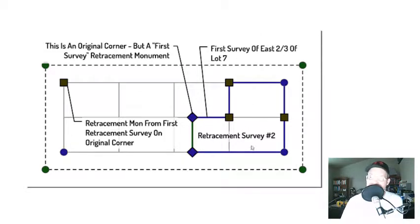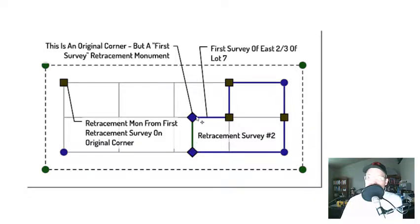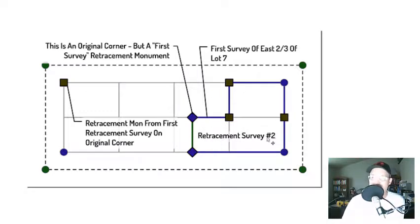This survey is the second retracement survey in this block, but it's what Brown's calls the 'first survey' of the east two-thirds of the lot. It's not an original survey because it didn't create that two-thirds chunk — it's just retracing what was in the deed. If this had been a parcel map, these monuments would be original controlling monuments per the parcel map, but we're just retracing a deed — that's what Mr. Brown calls a first survey. What he says in chapter two is these monuments get treated with a little more deference than a regular retracement monument because they were the first monuments set to mark this survey. There's case law showing that if this retracement survey was done shortly after the deed transfer, courts will sometimes treat these first survey monuments like original controlling monuments.